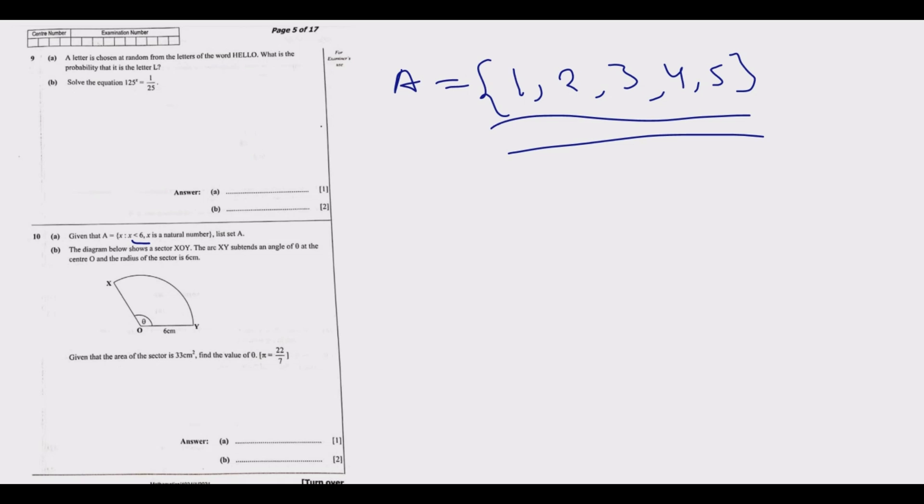Now the area of a sector is given by: theta, the angle that is subtending that sector, over 360. This is just a fraction, because a complete circle, that theta is 360, so 360 over 360 is 1. Since it's a sector, we get the fraction of that, and then we multiply by the area. The area is given by pi r squared.